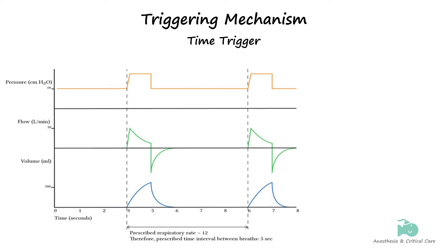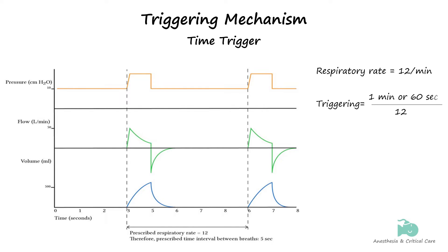For instance, looking at the waveforms provided, when a respiratory rate of 12 has been set, the ventilator will deliver inspiratory flow exactly every 5 seconds. Such breaths are characterized as mandatory, implying that the patient has no choice in the matter. A time-triggered mode is always mandatory.